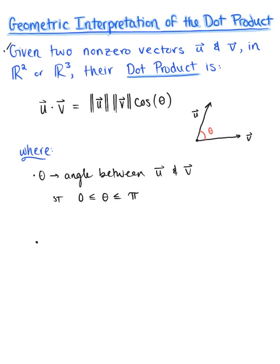One note before the derivation: if vector u equals the zero vector, or if vector v equals the zero vector, then from our algebraic properties we know the dot product of those two vectors is 0, thus implying that theta is undefined. So if either vector u or vector v is the zero vector, then vector u dot vector v equals 0, and the angle theta is undefined.